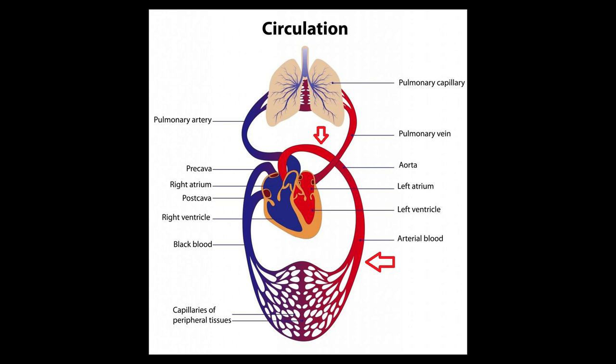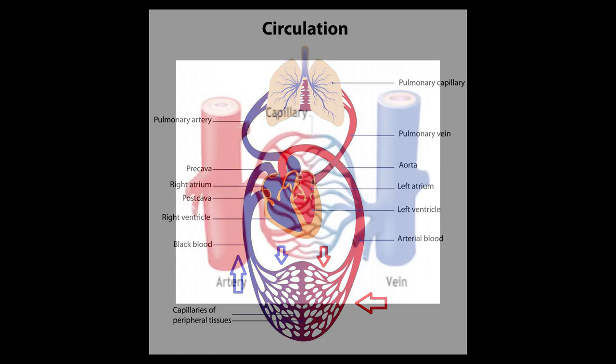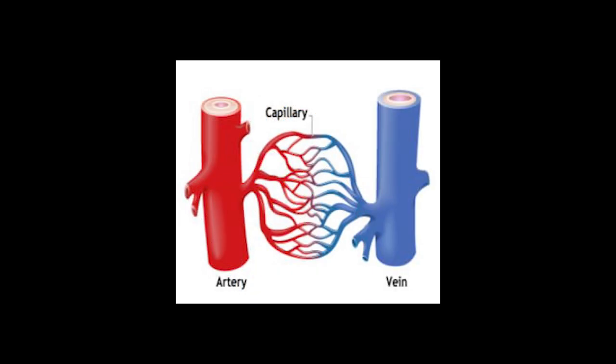The blood travels down arteries, and at the distant capillaries there's another oxygen and carbon dioxide exchange. The CO2-rich blood travels down the veins back to the right side of the heart, which completes the cycle. Blood vessels traveling away from the heart are called arteries, and blood vessels traveling toward the heart are called veins.